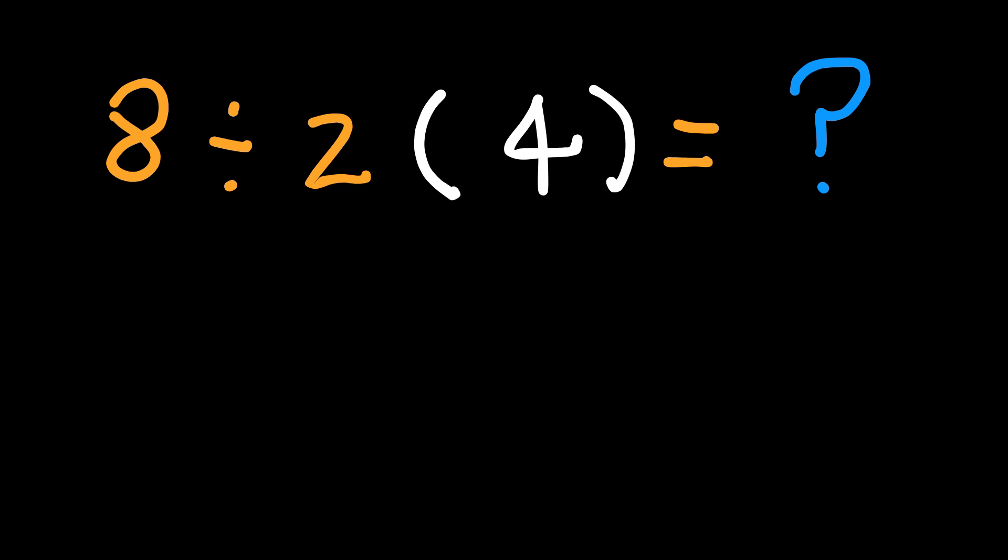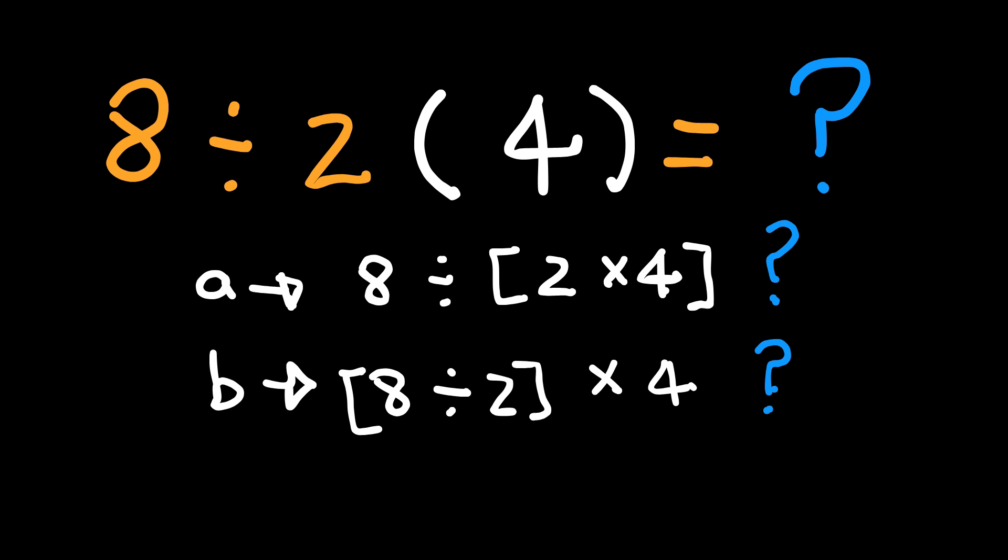Here's the big question. Is this 8 divided by 2 times 4? Or is it 8 divided by 2 times 4? Depending on how you see it, you either get 8 divided by 2 times 4 equal 8 divided by 8, 1. Or, 8 divided by 2 times 4 equal 16.